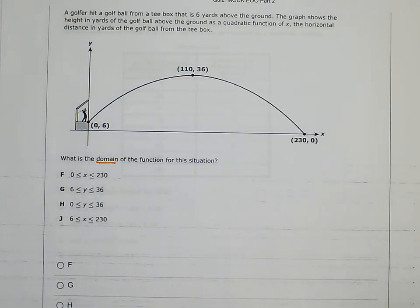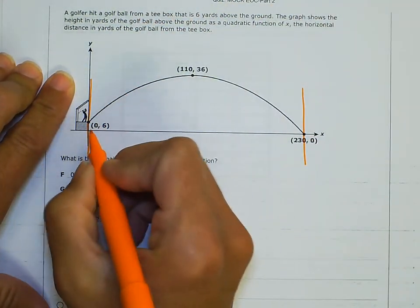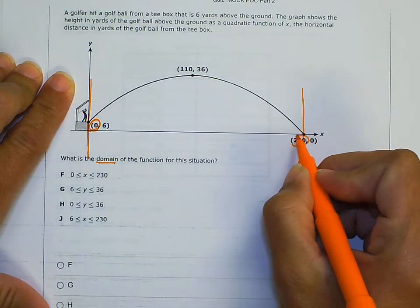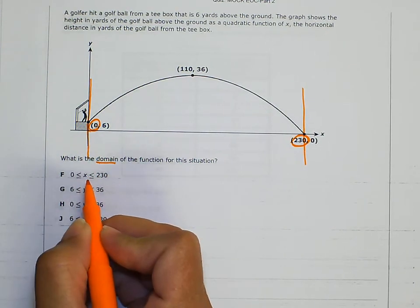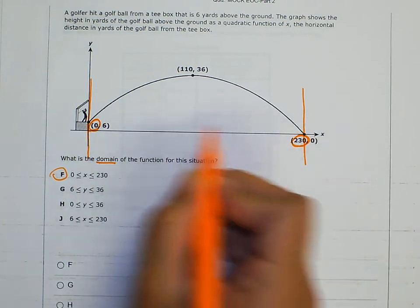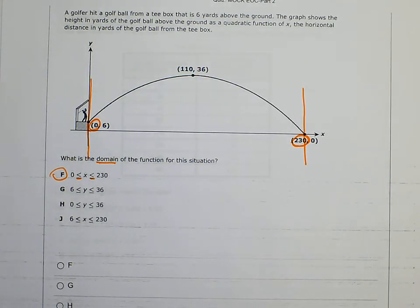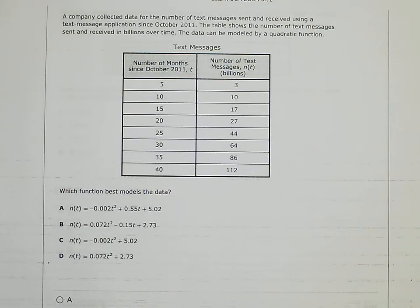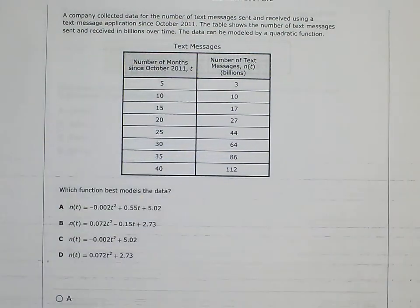Domain goes left to right and deals with our x's. If I'm trying to box it in, it goes from x = 0 to x = 230. The correct answer is 0 ≤ x ≤ 230. We see colored-in dots in both spots, so there's an equal sign on both sides — answer F. If you forgot what domain was, check your brain dump: domain is your x, going left to right.